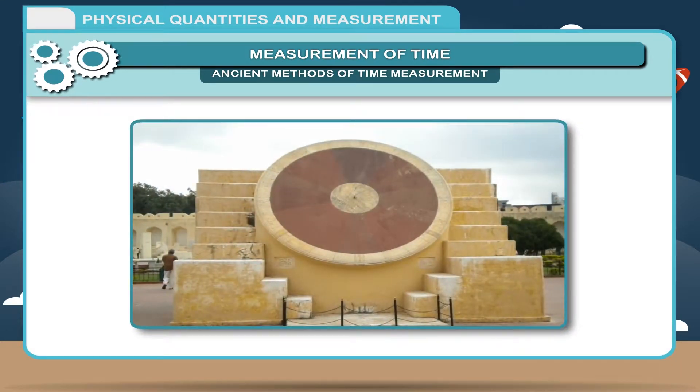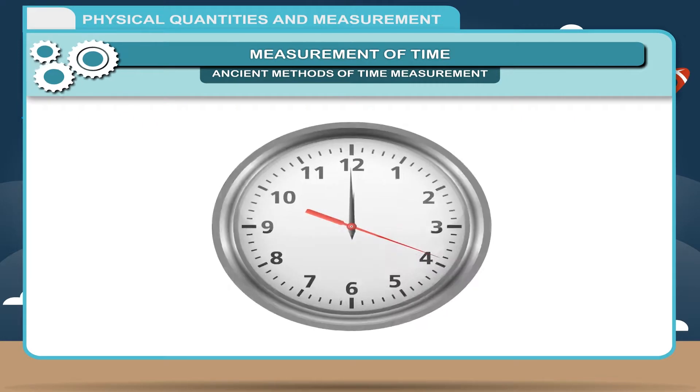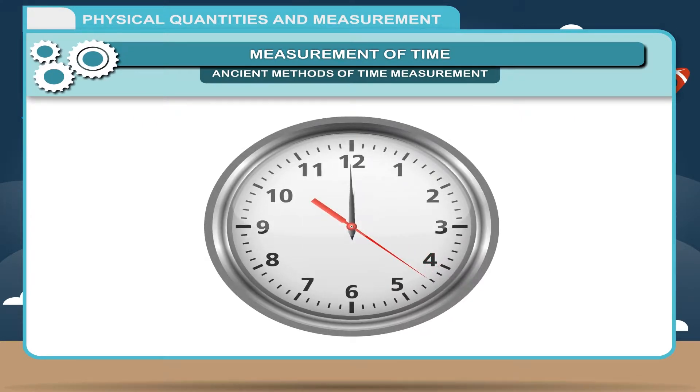The time indicated by these sundials are correct. However, these do not work after sunset or on cloudy days. Modern clocks and watches also measure time with the help of events that repeat after a fixed time interval.